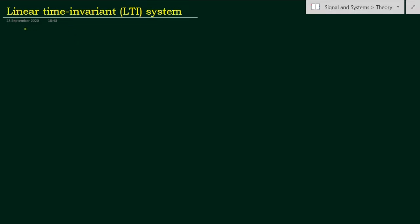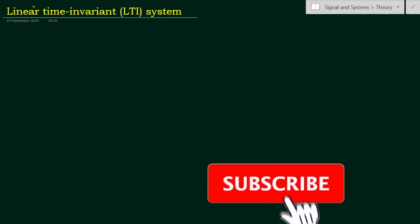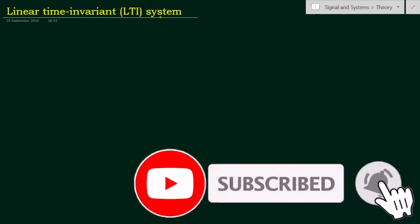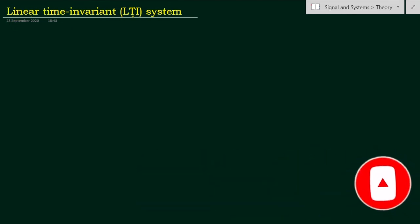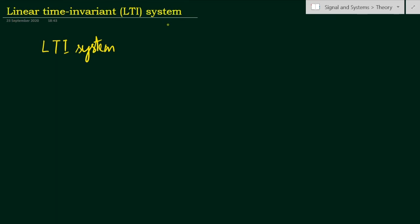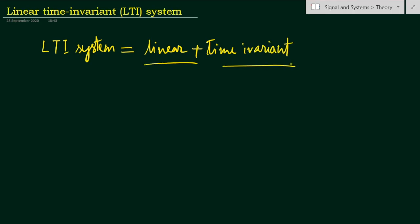Dear students, in this video we will learn about linear time invariant systems. A system is said to be a linear time invariant system, or LTI system, if it is linear as well as time invariant — that is, linear plus time invariant. Both properties it has to satisfy.